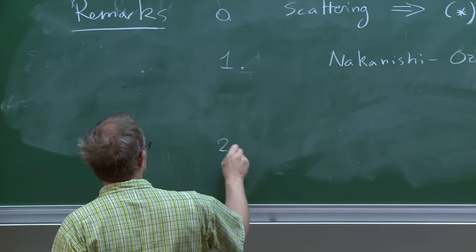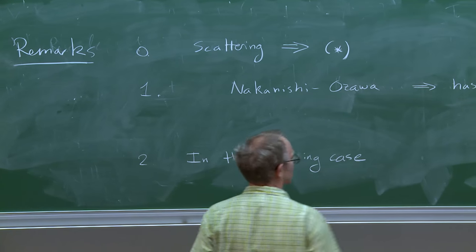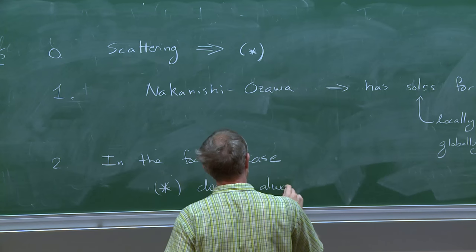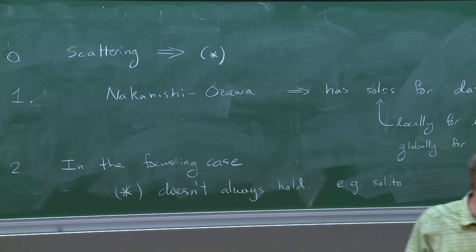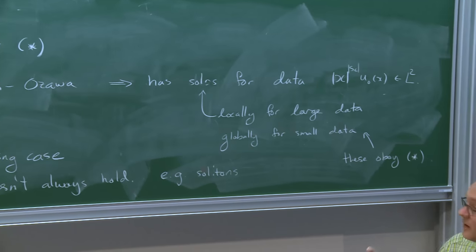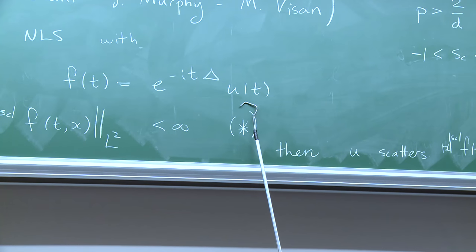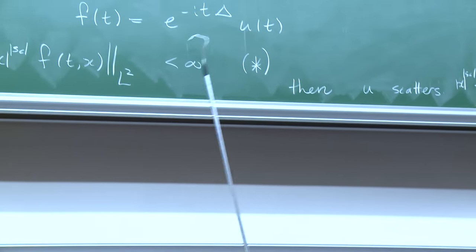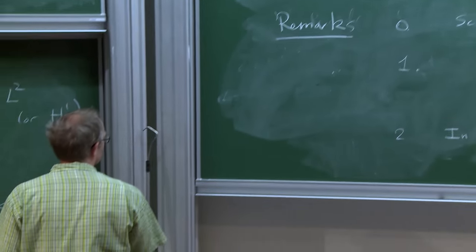In the focusing case, star doesn't always hold—for example, you have solitons. As I remarked in remark zero, if your solution happens to scatter then star will hold, but it doesn't hold for all initial data because of solitons. For a soliton, the solution wiggles around in a compact set in physical space, which means when propagated by a large time it spreads out astronomically, losing compactness. So star certainly doesn't hold for solitons.